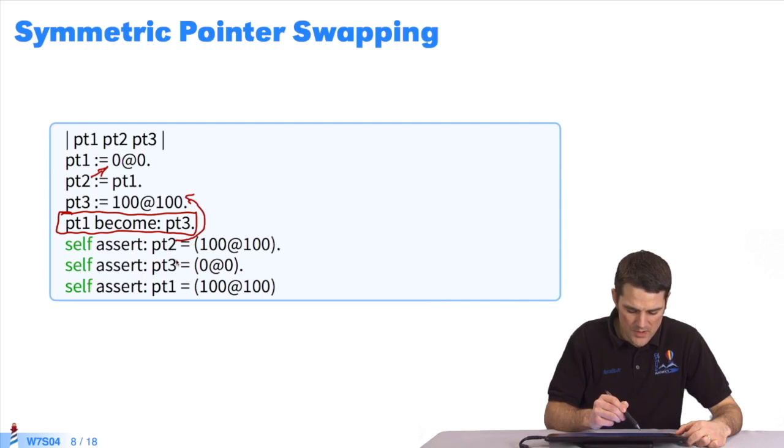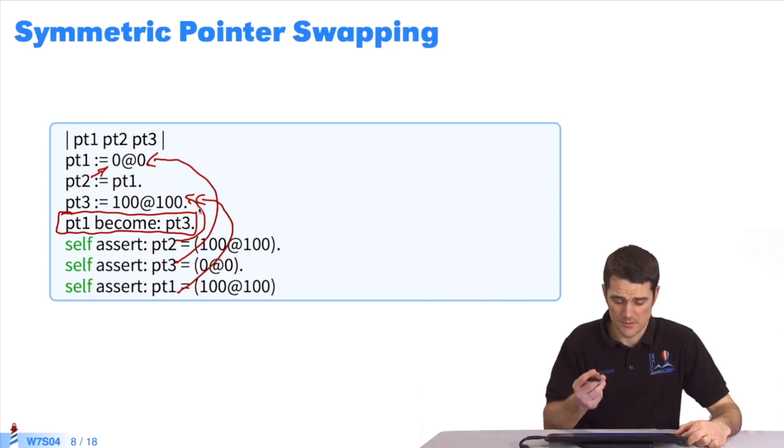As for point 3, since it's symmetrical, it will point to what point 1 pointed to, up the top, and point 1 points to what point 3 pointed to. The points have thus been swapped symmetrically.